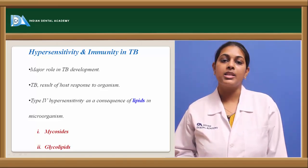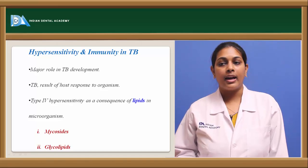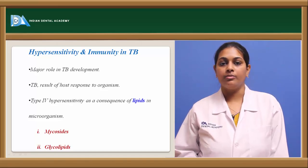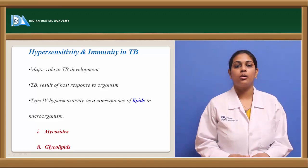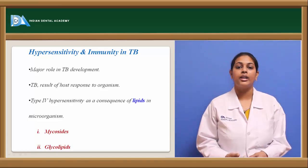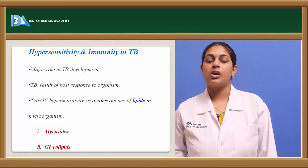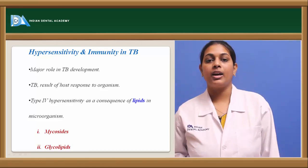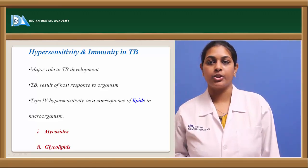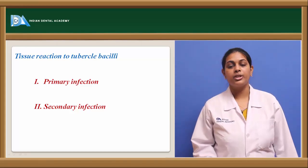In an immunocompromised patient, there is no such T lymphocyte action; rather the lipids present within the bacterial cell wall dominate and fight against the host immune system. Among the glycolipids present in the bacterial cell wall is wax D. The bacterial cell wall also naturally contains mycolic acid, which has a role in developing hypersensitivity and immunity in TB patients.